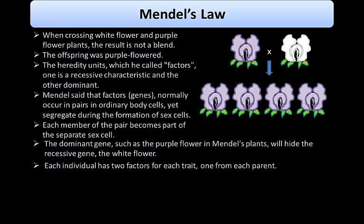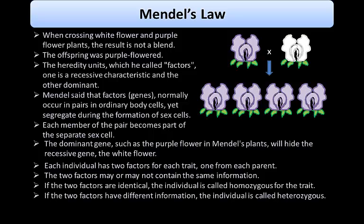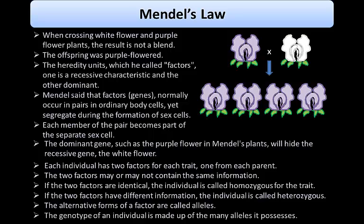Mendel stated that each individual has two factors for each trait, one from each parent. The two factors may or may not contain the same information. If the two factors are identical, the individual is called homozygous for that trait. The alternative forms of a factor are called alleles. The genotype of an individual is made up of the many alleles it possesses, and the physical appearance — the phenotype — is determined by its alleles as well as its environment. One allele is given by the female parent and the other by the male parent.